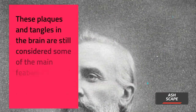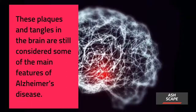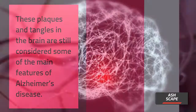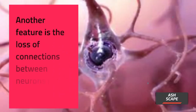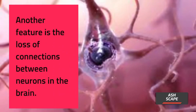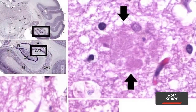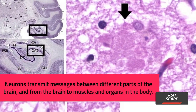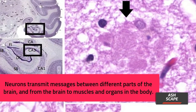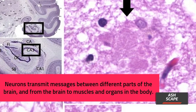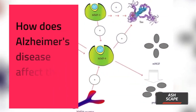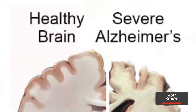These plaques and tangles in the brain are still considered some of the main features of Alzheimer's disease. Another feature is the loss of connections between neurons in the brain. Neurons transmit messages between different parts of the brain and from the brain to muscles and organs in the body.